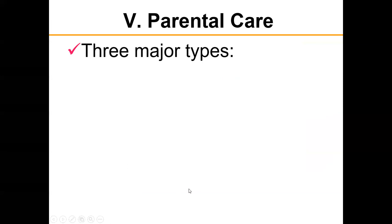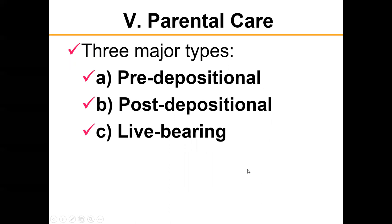Parental care is defined as any form of post-oppositional parental behavior that increases the survival of offspring at some expense to the parent. There are three major types. Pre-depositional parental care involves the quantity and size of egg components — the eggshell, proteins, and lipids. In oviparous reptiles, embryo nourishment comes from the yolk. For example, hatchling turtles and crocodiles have 50–70% more lipids than required for hatching and emergence, representing a tremendous pre-depositional parental investment.